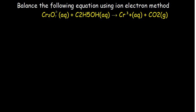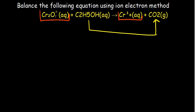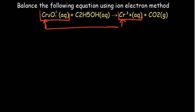Look at this equation — you can pause the video and try to balance it. We need to balance it using the ion-electron method, also called the half-reaction method. We identify two half reactions making up the full equation. The equation is not balanced: there are two chromium atoms on one side and a single chromium atom on the other. Balancing by observation alone won't work here.